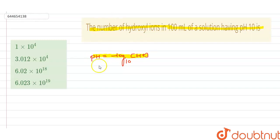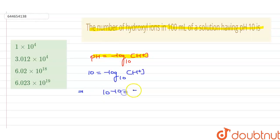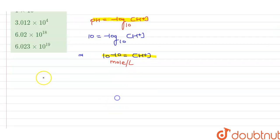Here we have been given the pH as 10, so from this we can easily find the concentration of H⁺ ion. The concentration of H⁺ ion will be 10 to the power minus 10, with units of moles per liter.